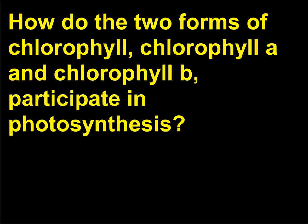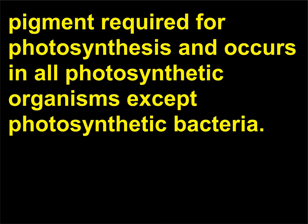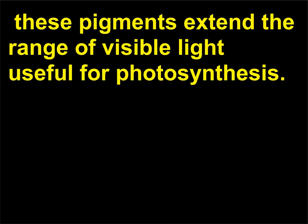How do the two forms of chlorophyll — chlorophyll A and chlorophyll B — participate in photosynthesis? During photosynthesis, light is absorbed by pigments present in organisms. Chlorophyll A is the primary pigment required for photosynthesis and occurs in all photosynthetic organisms except photosynthetic bacteria. Accessory pigments such as carotenoids and chlorophyll B absorb light that chlorophyll A cannot absorb, extending the range of visible light useful for photosynthesis.